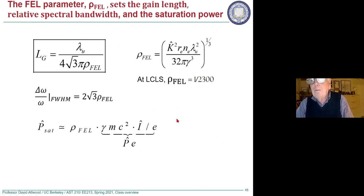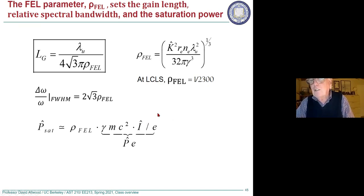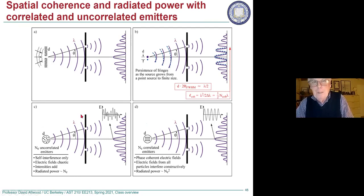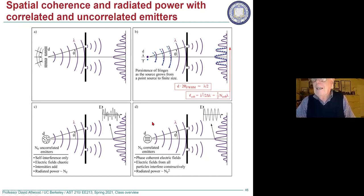We keep listening every year for the Nobel announcements to see if the x-ray free electron laser is going to get a prize, but we've been disappointed. I know personally that the Nobel Physics Committee has had a strong interest in that for several years but never quite gets there — black holes keep winning. There's also a topic we'll get to about when you see uncorrelated emitters versus correlated emitters — this is a Young's double slit experiment for those who recognize it. This topic gets explained in the fourth chapter but comes up in the high harmonic and FEL sources.